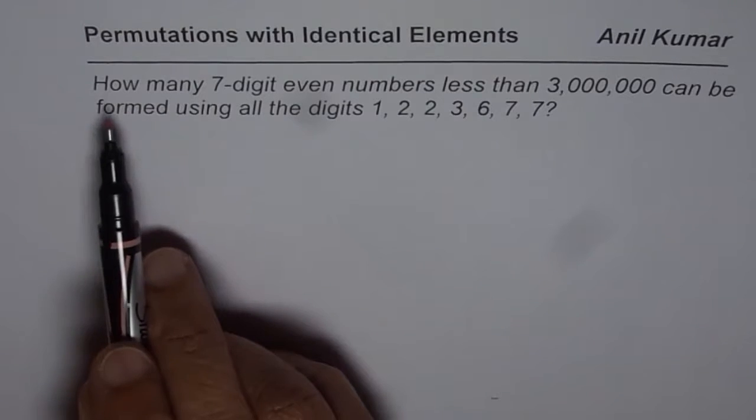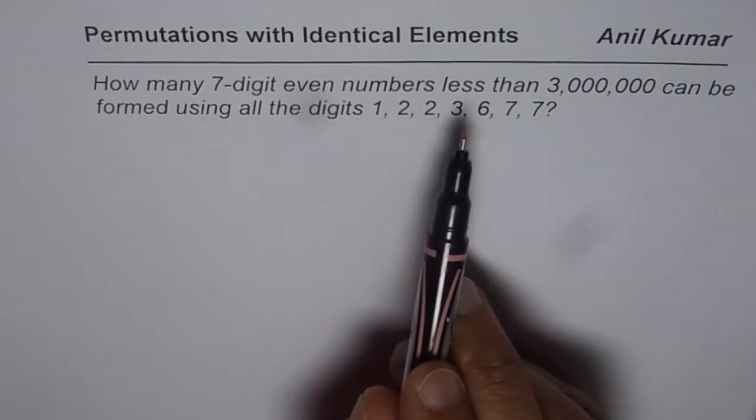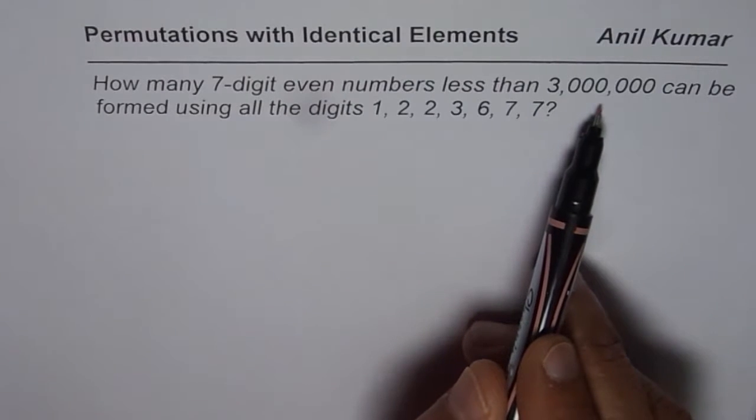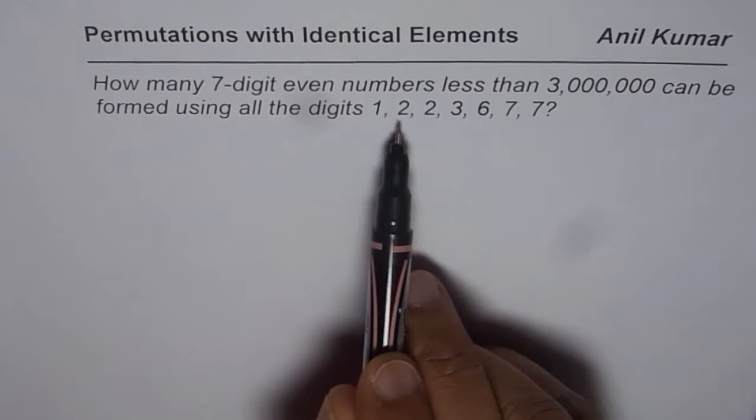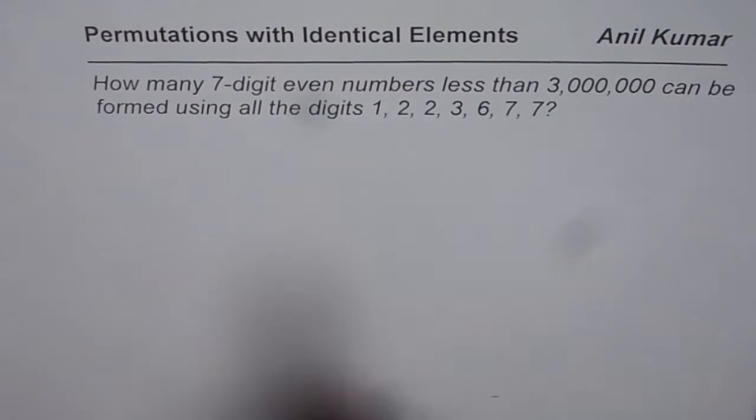It says, how many 7-digit even numbers less than 3 million can be formed using all the digits 1, 2, 2, 3, 6, 7, 7?